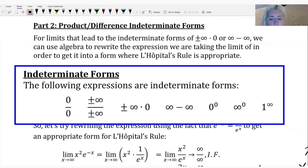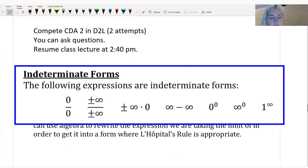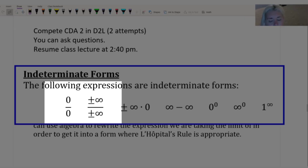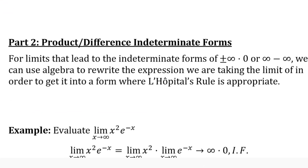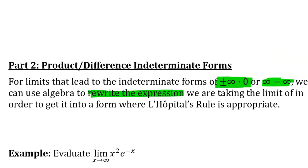At the beginning of the lecture on L'Hôpital's rule, we talked about the different indeterminate forms. We know that L'Hôpital's rule only applies to indeterminate forms 0/0 or ∞/∞. What we're going to talk about next is if we get a different kind of indeterminate form — which is ±∞ × 0 or ∞ - ∞ — some techniques we might use to rewrite the expression algebraically in order to get it into a form where L'Hôpital's rule applies.